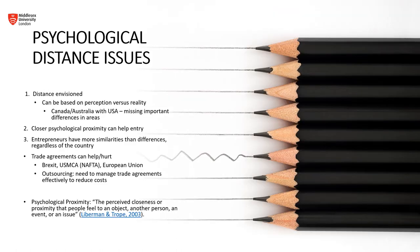Let's dive a bit deeper and look at psychological distance issues, which have three components. The first is distance envisioned — this can be based on perception versus reality, such as Canada and Australia with the United States, where you might miss important differences. Although all three of these countries speak English, they have very different cultures and very different starting points. They have evolved and grown into very different countries.